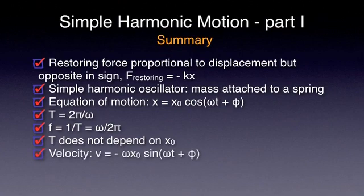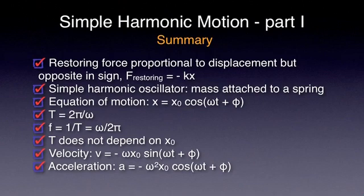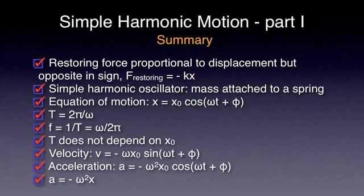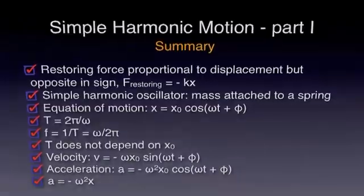Velocity and acceleration are given by: v equals minus omega·x₀ sine(ω·t + φ), and a equals minus omega-squared·x₀ cosine(ω·t + φ). For a harmonic oscillator, the relationship between displacement and acceleration is a equals minus omega-squared times x. For a more in-depth look into simple harmonic motion and some of its applications, watch the second part of this podcast.